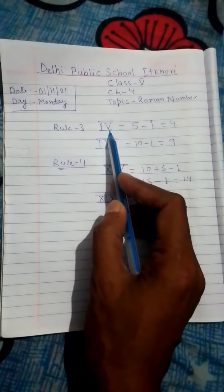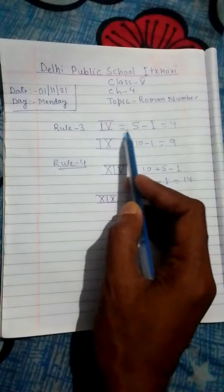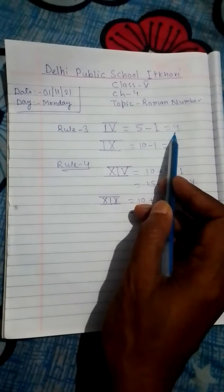So for IV, we can write 5 minus for I, 1. This will give 4.